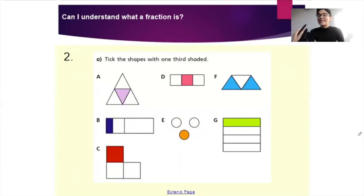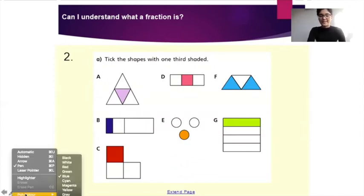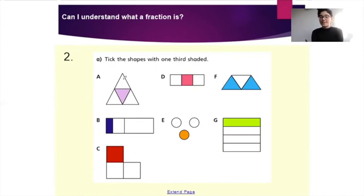Your next task is number two — tick the shapes with one third shaded. Which of these shapes, and there could be more than one answer, are one third of the way shaded? Tick your answers. One third means one out of three, so that is what we're looking for in these shapes.